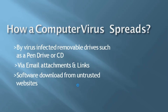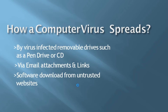How a computer virus spreads. What are the sources from where a virus can enter into the computer? By virus-infected removable drives such as pen drive or CD. Via email attachments and links. Software downloaded from untrusted websites.